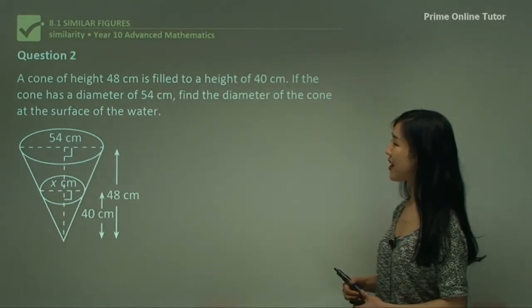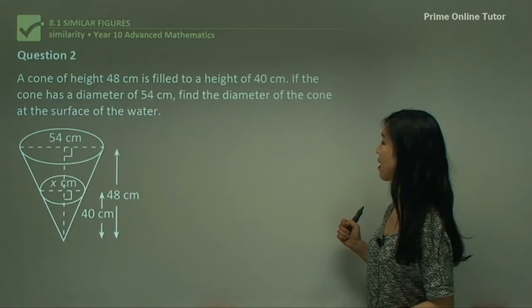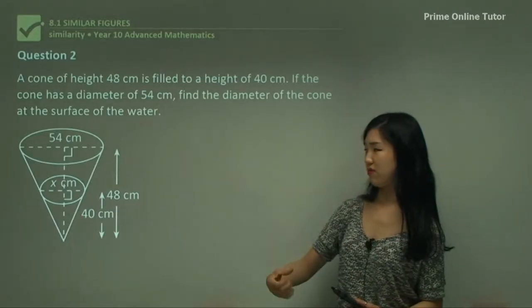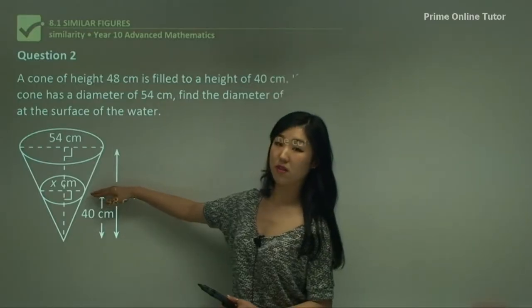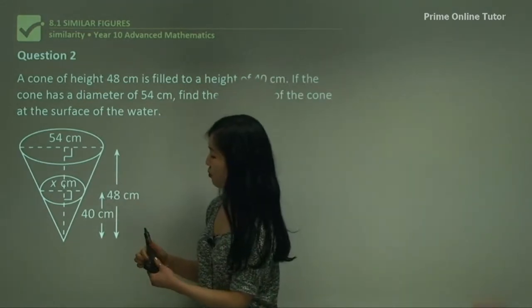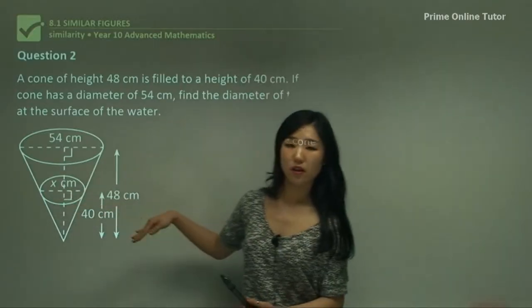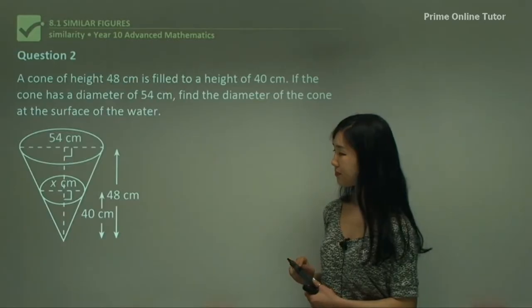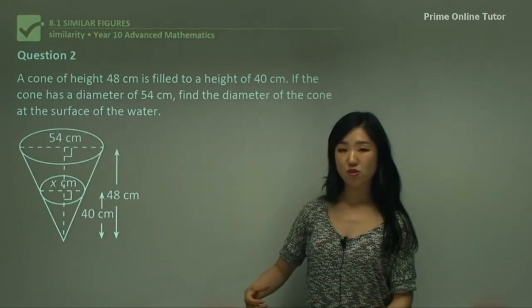Question 2. A cone of height 48 centimetres is filled to a height of 40 centimetres. If the cone has a diameter of 54 centimetres, find the diameter of the cone at the surface of the water. So this is our cone — like a conical flask where you pour water in. The water is filled up to 40 centimetres. We want to find the diameter x at the water level. The small cone of water is similar to the larger cone — it's exactly the same shape, just smaller.